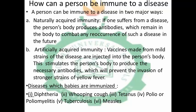These are the diseases which babies are immunized against: diphtheria, whooping cough, tetanus, polio or poliomyelitis, tuberculosis, and measles. Babies are immunized against these diseases to provide their bodies with antibodies to prevent further effects of these diseases, because their immunity is not yet strong enough or has not adapted to these types of diseases.